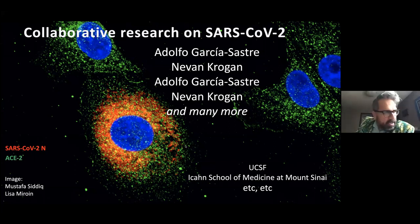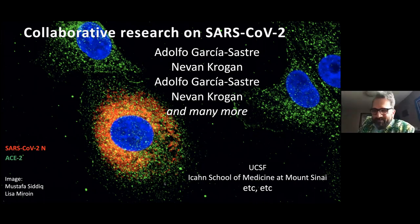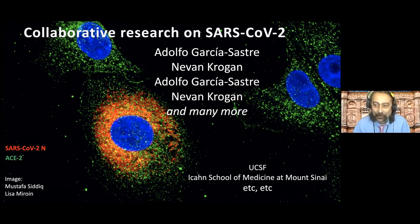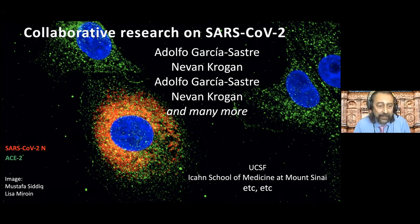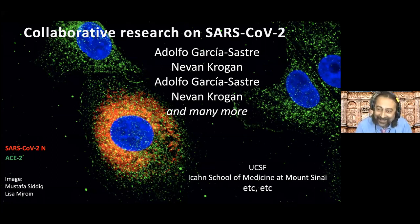Thanks for inviting us and thanks to everyone tuning in. It's a very collaborative project that's been going on the last few months. Adolfo is going to start, I'm going to advance the slides, and the image you see here is a viral cell infected with SARS-CoV-2, using red for the nucleoprotein and green for the ACE2 receptor.